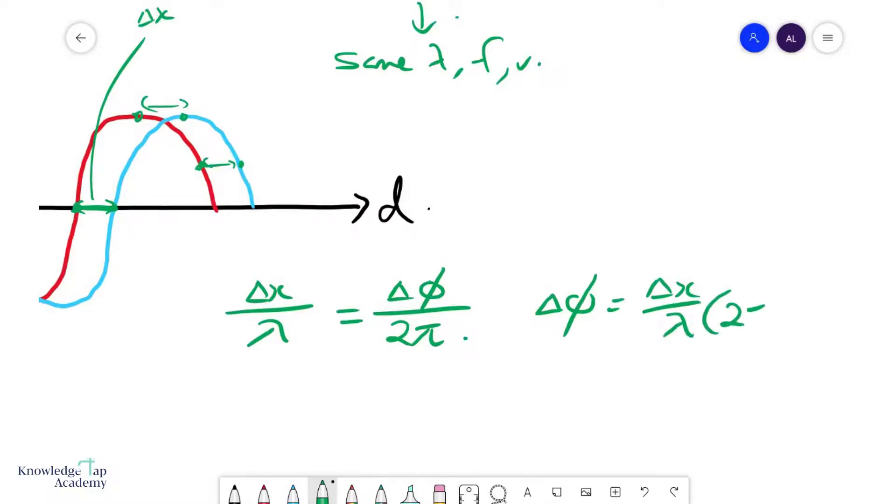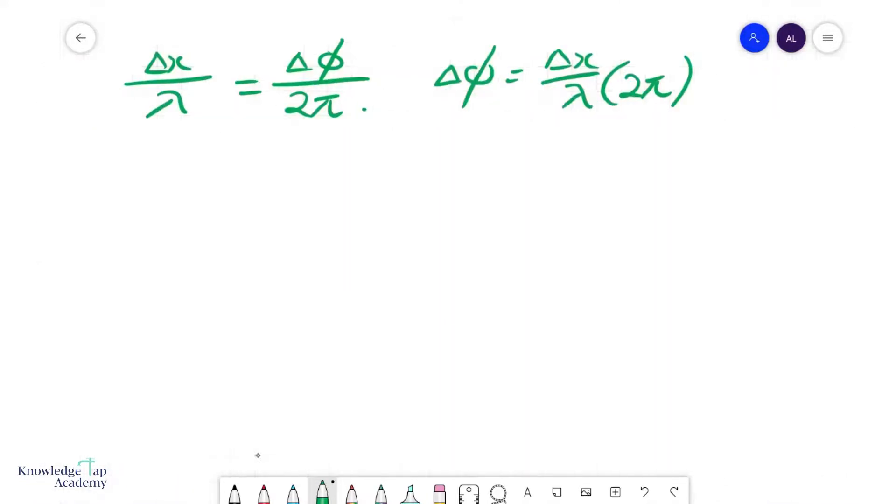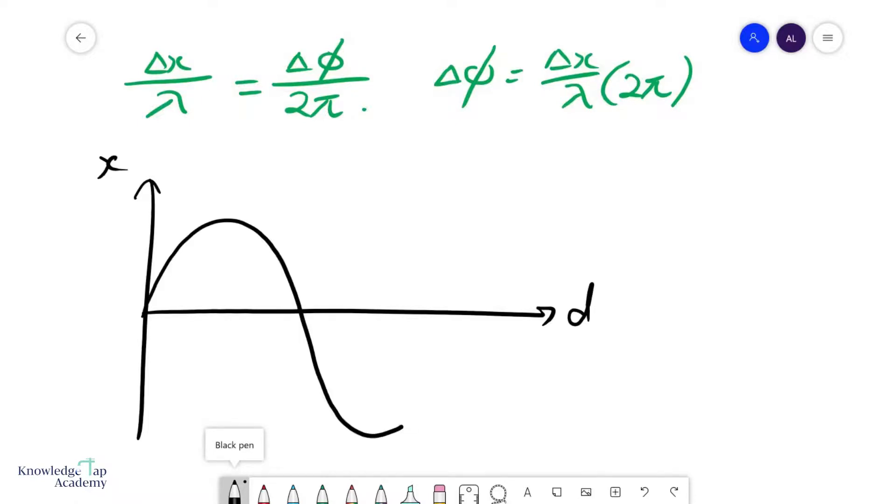over lambda times 2π. That's how you find phase difference between two waves. You may also be asked to find the phase difference between two points on the same wave, and that is also very easy. So this